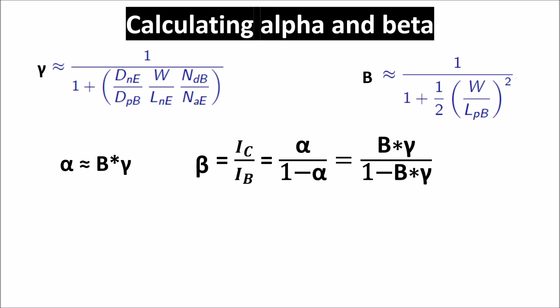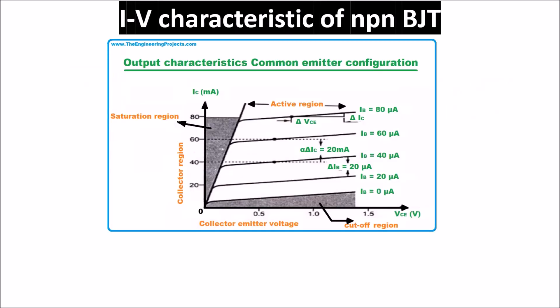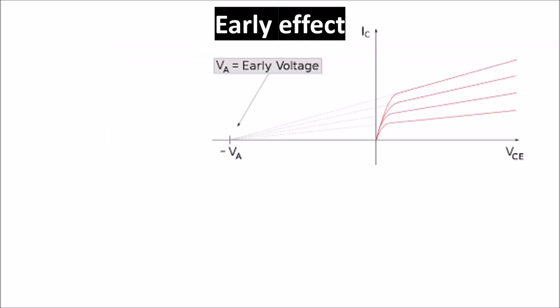Here we see the current-voltage characteristic of the BJT — this is for an NPN transistor, but for a PNP only the directions of current and voltage change. We can see the saturation region, the cutoff region, and especially the active region in which a variation of 20 microamperes in the base current causes a variation of 20 milliamperes in the collector current — a good amplification. We also observe that as VCE increases, the collector current increases slightly, so the lines in the I-V curves are not perfectly parallel.